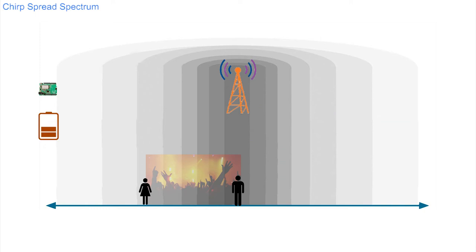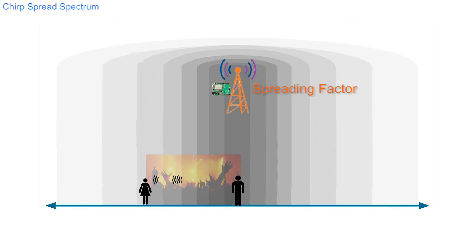An option would be to speak more slowly and clearly. This is what LoRaWAN does electronically, and it's called the spreading factor.